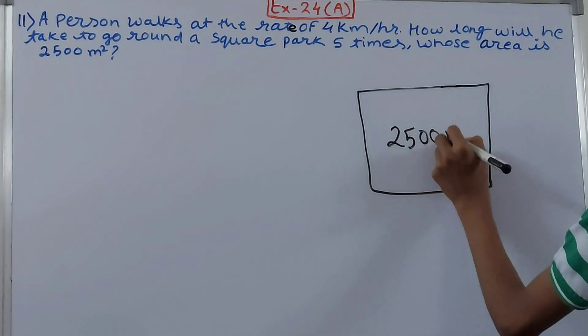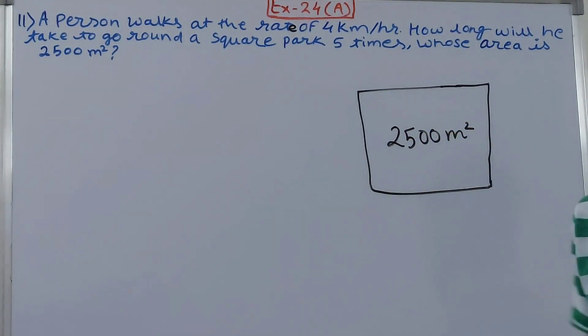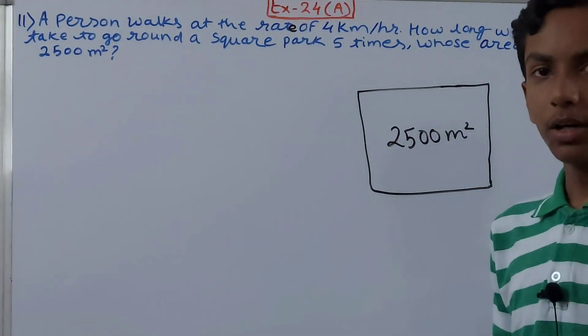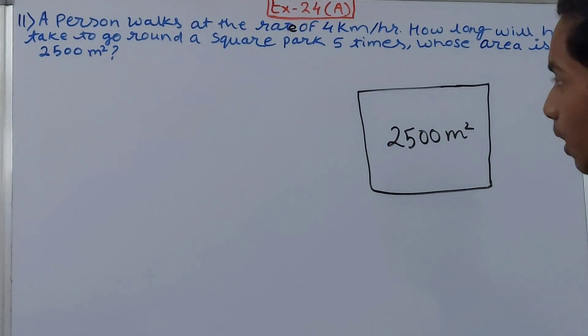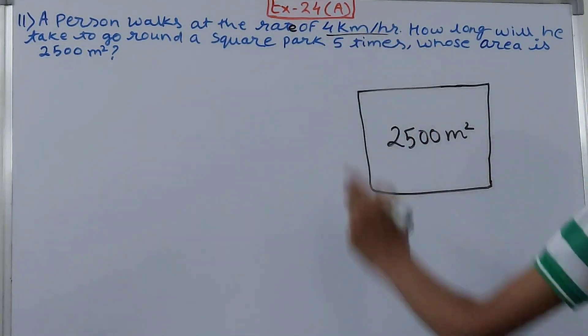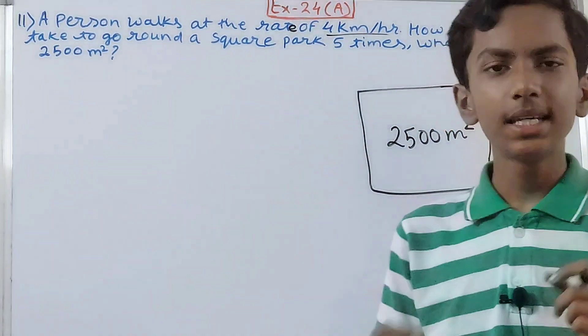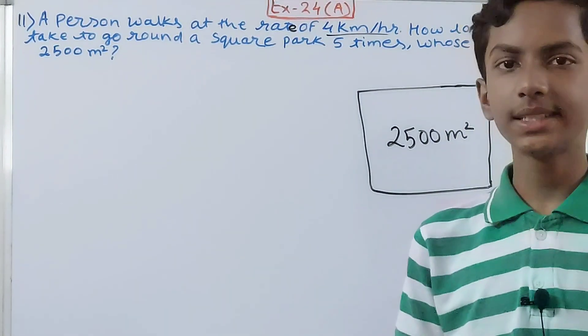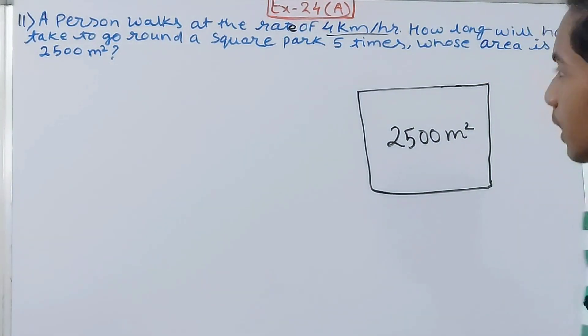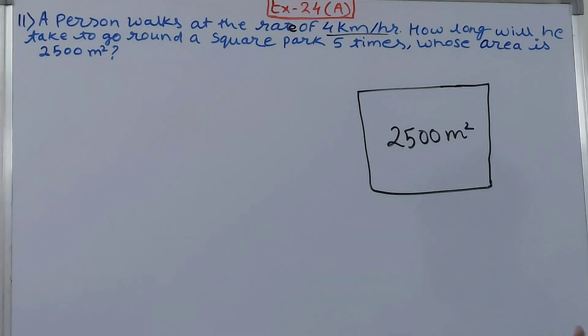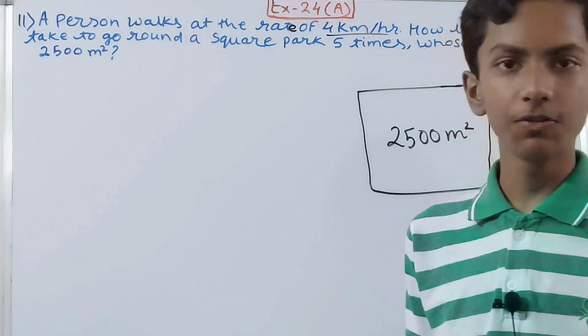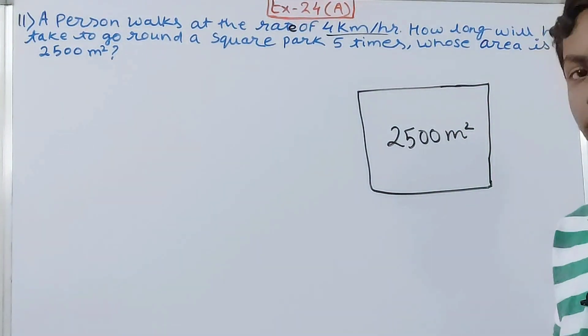The area of the entire park is 2500 square meters. The problem also says a person is walking at a speed of 4 kilometers per hour, which means he is covering 4 kilometers in one hour.